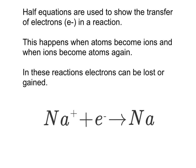In this tutorial we'll be looking at half equations and how to write them. A half equation is used to show the transfer of electrons — written as e⁻ — in a reaction. This transfer of electrons happens when atoms become ions and when ions become atoms again. In these reactions, electrons can be lost or gained. At the bottom is an example of a half equation showing the electrons.